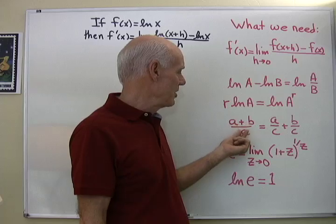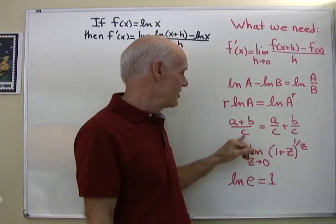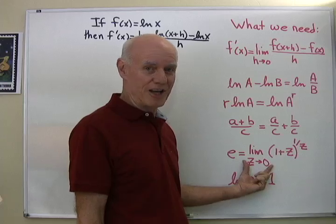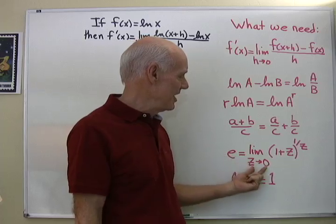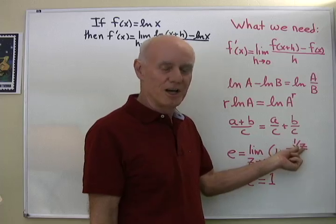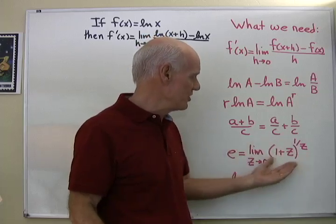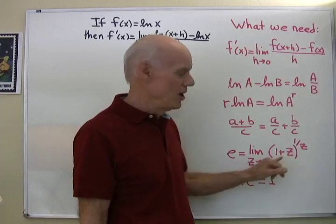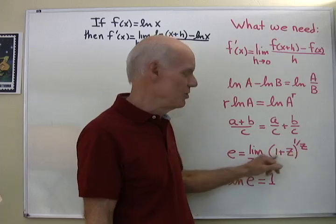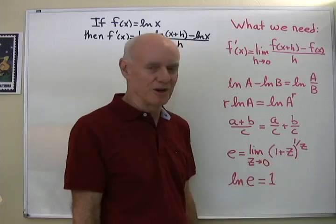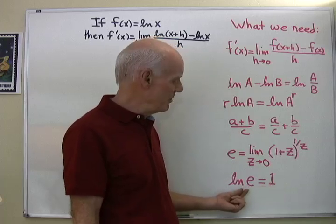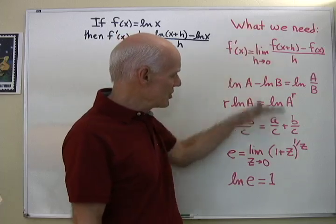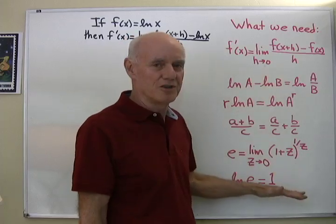You also need the fraction property that (a+b)/c = a/c + b/c, and the definition of e: e = lim(z→0) of (1+z)^(1/z). Look back at a previous video to see that form of the definition of e — the variable name is arbitrary. Finally, ln(e) = 1, because the natural log base is e and e^1 = e. These are all things you already know.